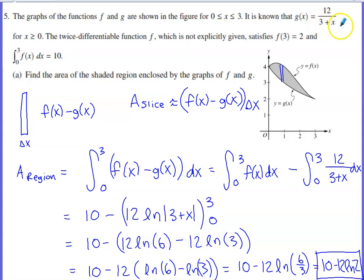They give us the expression for g of x. f is twice differentiable. We don't know what the equation for f of x is, but they tell us that f of three equals two. They give us the value of the integral of f of x from zero to three. The answer to that integral is 10.